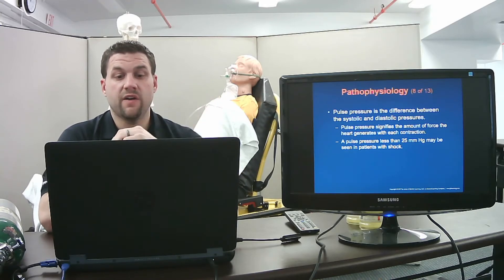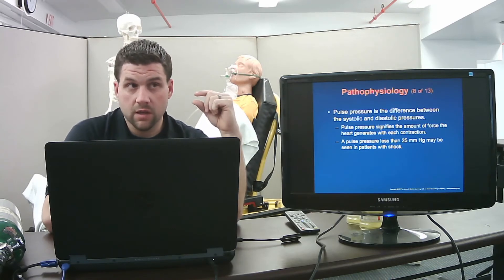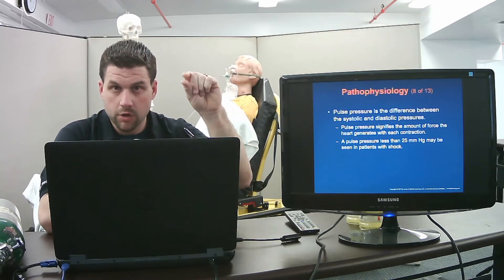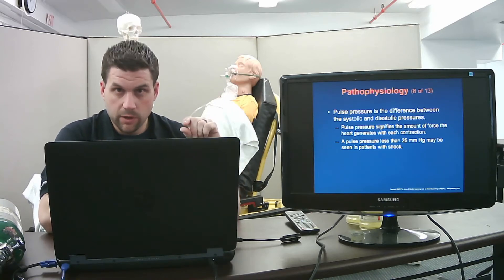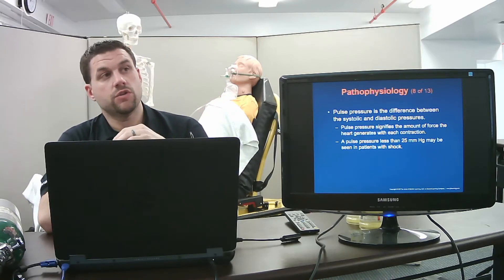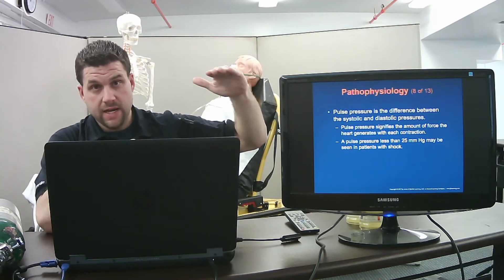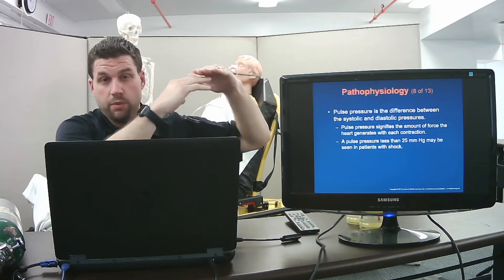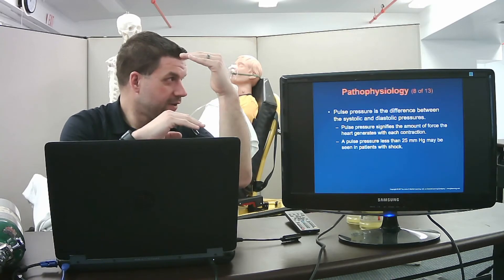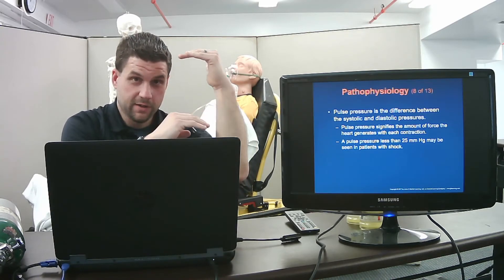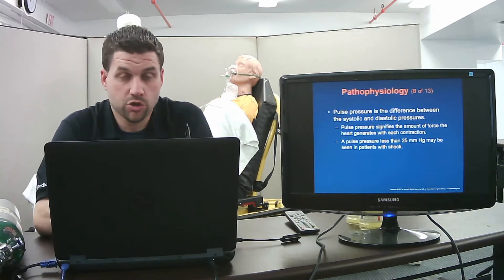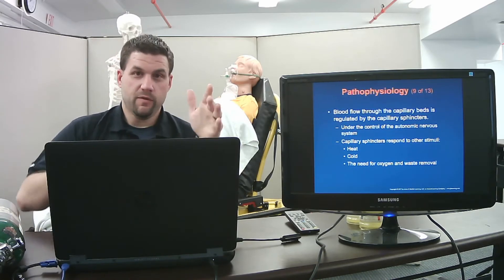A pulse pressure less than 25 mmHg may be seen in patients with shock. For a normal blood pressure of 120 over 80, the pulse pressure is 40 mmHg — that's the difference between the two numbers. Millimeters of mercury is the standard measurement for blood pressure.